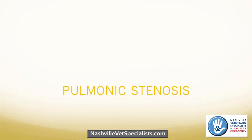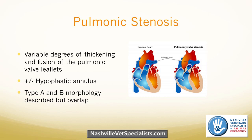Moving on to pulmonic stenosis — the second most common congenital defect we see in dogs. With pulmonic stenosis, there are variable degrees of thickening and fusion of the pulmonic valve leaflets, which separate the right ventricle from the pulmonary artery. Sometimes they can also have a hypoplastic annulus, meaning the pulmonary artery itself is too small or narrowed. There are different types described — mainly type A and type B morphology, with some overlap. Type A is mainly leaflets stuck together but not heavily thickened; type B has very thickened, dysplastic valve leaflets.